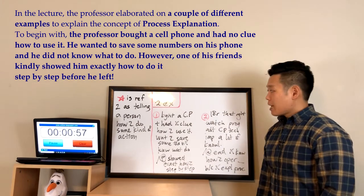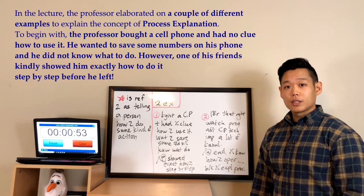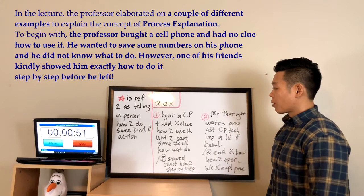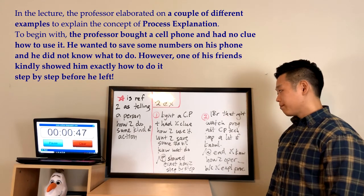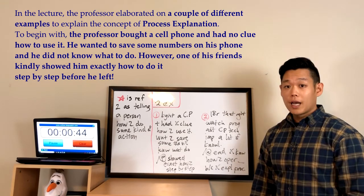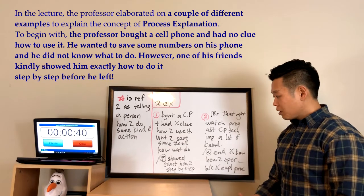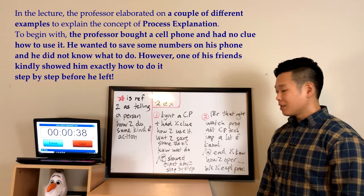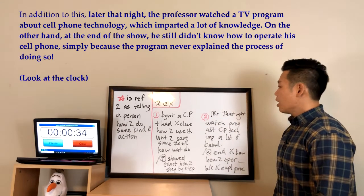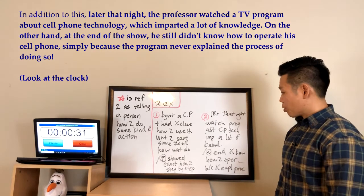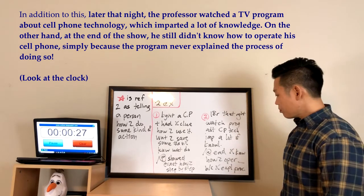In the lecture, the professor elaborated on a couple of different examples to explain the concept of process explanation. To begin with, the professor bought a cell phone and had no clue how to use it. He wanted to save some numbers on his phone and didn't know what to do. However, one of his friends kindly showed him exactly how to do it step by step before he left. In addition to this, later that night the professor watched a television program about cell phone technology, which imparted a lot of knowledge.